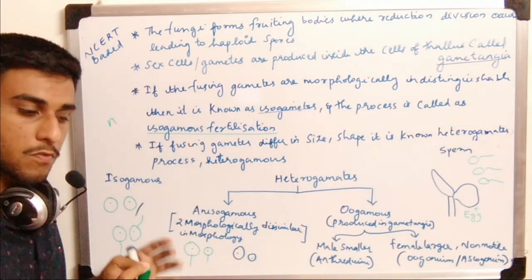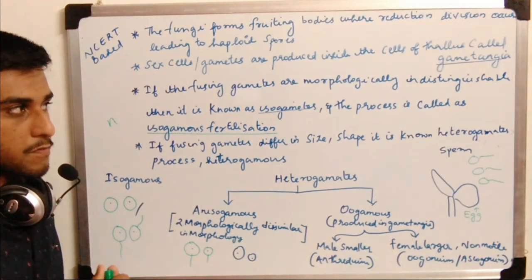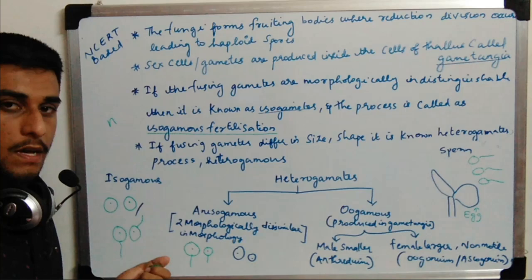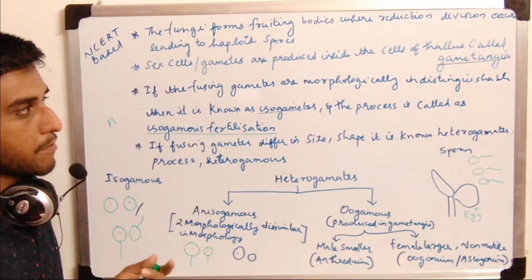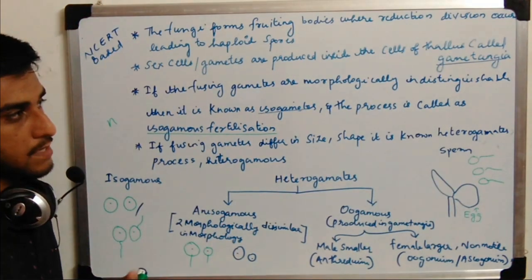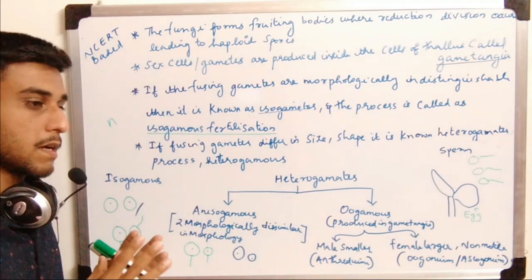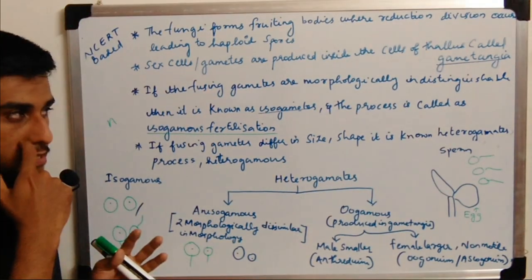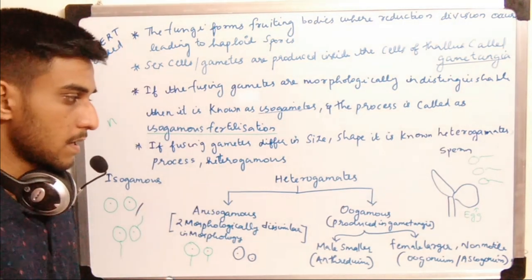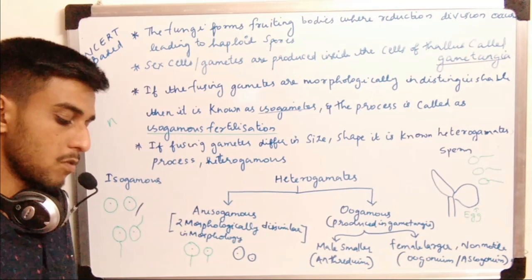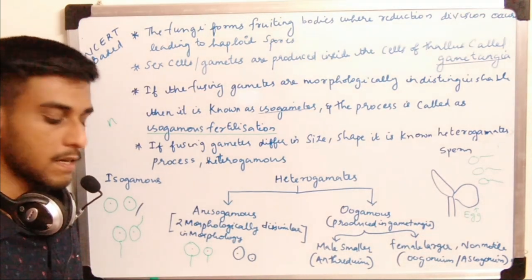After fusion the zygote is formed with a 2n condition, then it undergoes meiotic division — the reductional division — forming haploid spores. The sex cells or gametes are produced inside cells of a thallus known as the gametangia. Male gametes form in male gametangia and female gametes form in female gametangia.